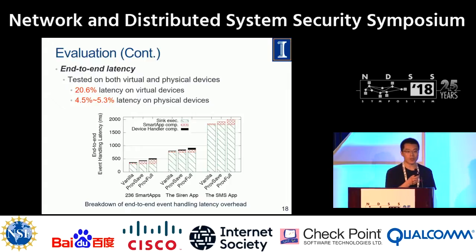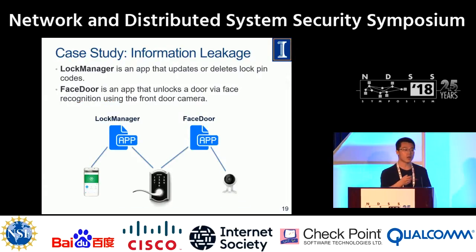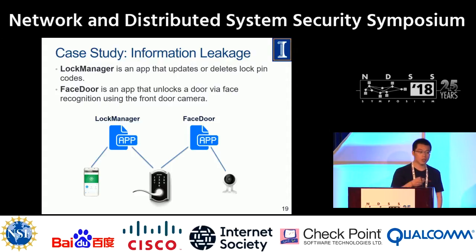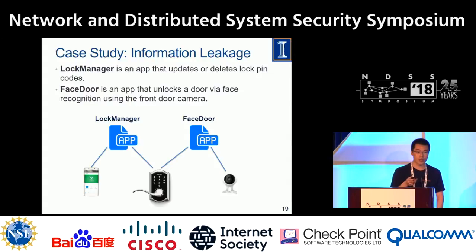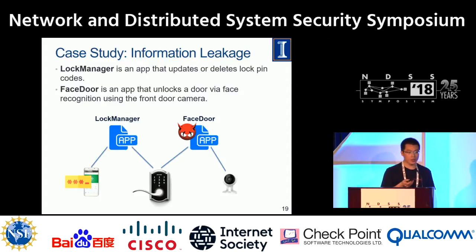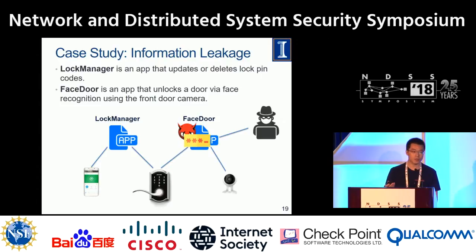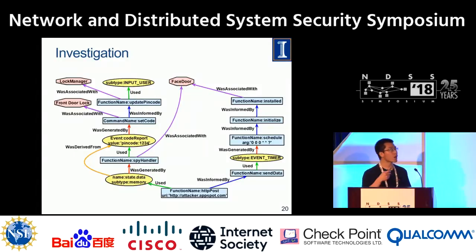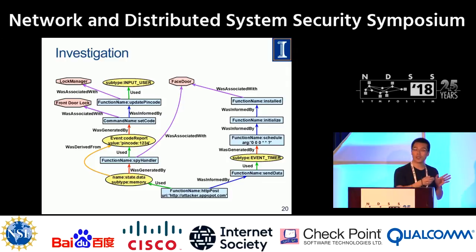Our framework has many use cases. Here I'll demonstrate one: investigating information leakage in your home. In this setting, there are two apps and two devices. The Log Manager app lets you update or set pin codes for the lock. The FaceDoor app unlocks the door using face recognition via the front door camera. However, this FaceDoor app is malicious — it spies on data from other devices and sends it to an attacker. The pin code flows from the Log Manager app to the lock, then to the FaceDoor app, and finally to the attacker.